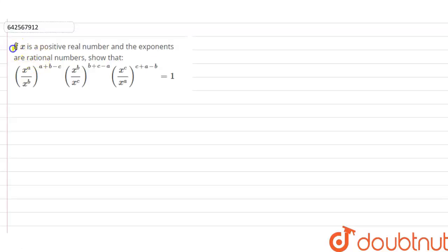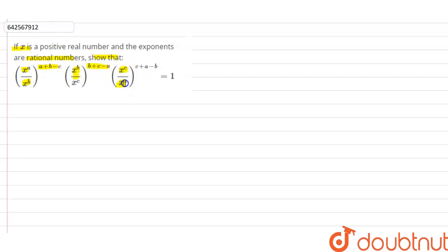The given question is: if x is a positive real number and the exponents are rational numbers, then prove that (x^a / x^b)^(a+b−c) × (x^b / x^c)^(b+c−a) × (x^c / x^a)^(c+a−b) = 1.